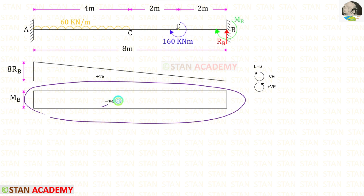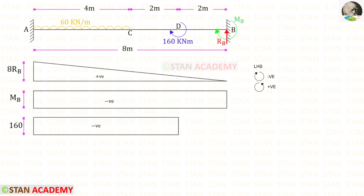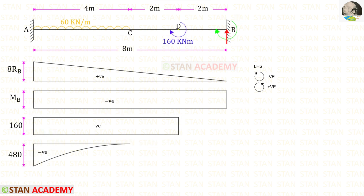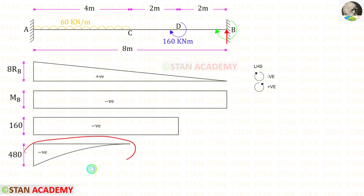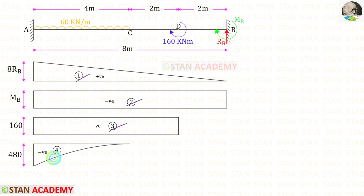The moment of 160 is acting in the clockwise direction so it will be negative. For the UDL, we multiply the load by the distance and then by the distance divided by 2, giving minus 480. The diagram will be in the shape of a parabola. Now let us name the diagrams as 1, 2, 3, and 4.